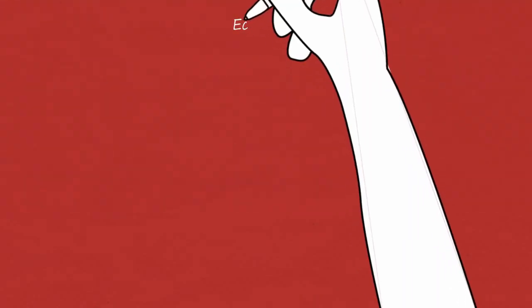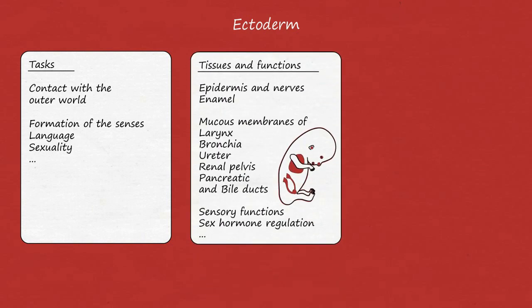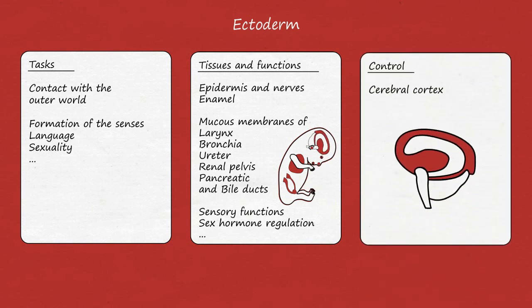The tissues that develop from the ectoderm are important for the contact with the outer world and for the interaction and hierarchy formation with other living beings of the same species. These include the epidermis, the nerves, the enamel, various mucous membranes, a large part of the sensory organs, and the regulation of sex hormones. All of these tissues and functions are under the control of the cerebral cortex.